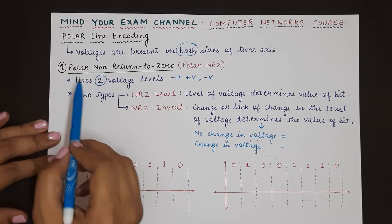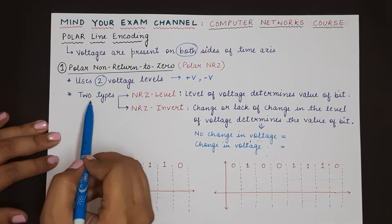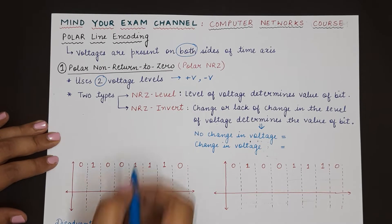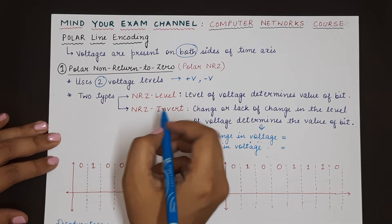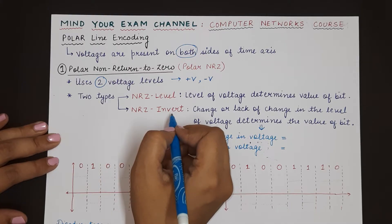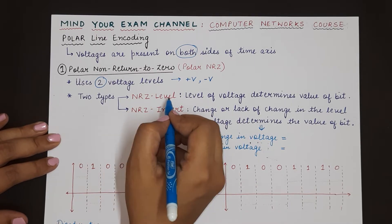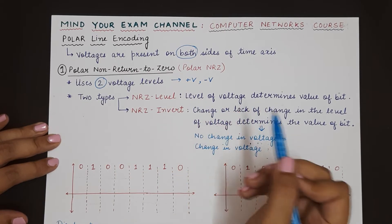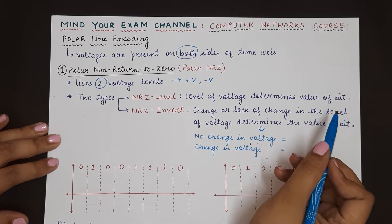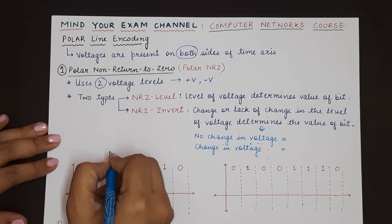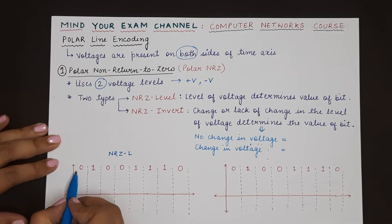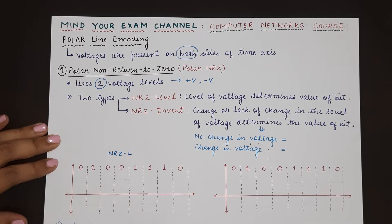Polar NRZ has two further subtypes: NRZ-L (NRZ level) and NRZ-I (NRZ invert). In case of NRZ-L, the level of the voltage determines the value of the bit. So if we have to represent the data 0, 1, 0, 0, 1, 1, 1, 0, the voltage level directly maps to each bit value.